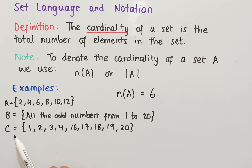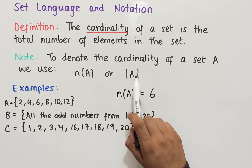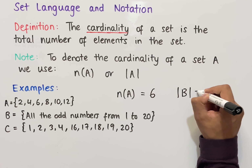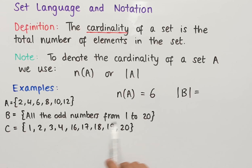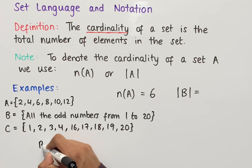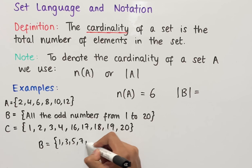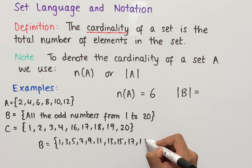Similarly, if we wanted to work out the cardinality of set B, we could write either N(B) or |B|. Let's use the second type of notation. Set B is the set of all odd numbers from 1 to 20, so let's list these out. Set B equals 1, 3, 5, 7, 9, 11, 13, 15, 17, and 19.